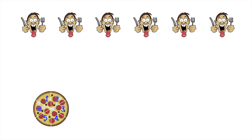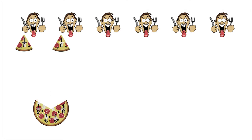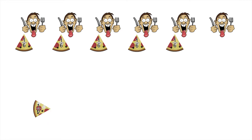That way the first pizza gets shared out equally. Each customer gets exactly one sixth of the first pizza, because the whole pizza has been divided into six equal sized slices and each customer gets exactly one slice.